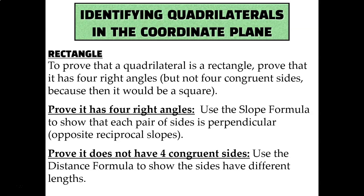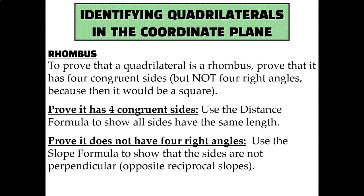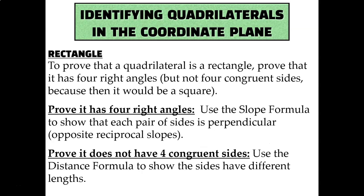The process for proving a rectangle versus the process for proving a rhombus are the same idea, but opposite. For a rhombus, you're using the distance formula to show that all four sides are the same, but you're using the slope formula to show that it doesn't have opposite reciprocal slopes. And for a rectangle, you're doing the opposite — use the slope formula to show that it has opposite reciprocal slopes, but then use the distance formula to show that it does not have four congruent sides.